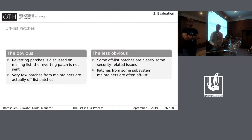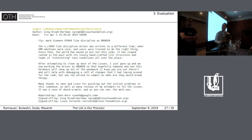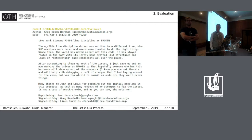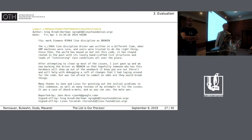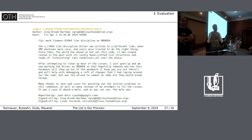Looking at one example: a patch from Greg — 'TTY: Mark Siemens R3964 line discipline as broken' — was included in the 5.0 kernel. If you look on the mailing list and try to find it, you can find some backports to other trees but no initial discussion on this patch. The commit message does say 'many thanks to Jan and Linus for pointing out the initial problems' — so there must be some kind of private channel going on. If you want to know the details, you'd have to ask the authors personally.